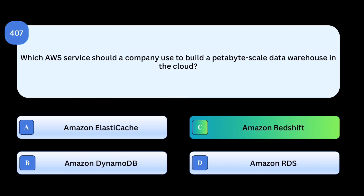Correct answer: Amazon Redshift. Amazon Redshift is a fully managed data warehouse service designed for large-scale analytics workloads. Why others are incorrect: Amazon ElastiCache provides caching, not warehousing. Amazon DynamoDB is a NoSQL database, not for analytics warehousing. Amazon RDS is a managed relational database, not for large-scale warehousing.